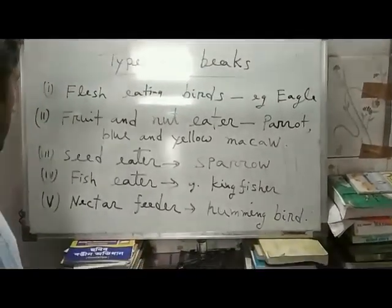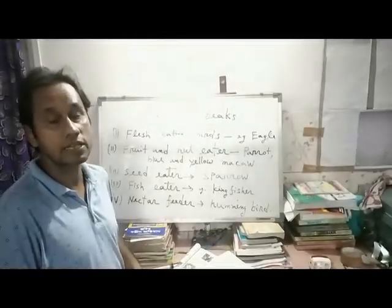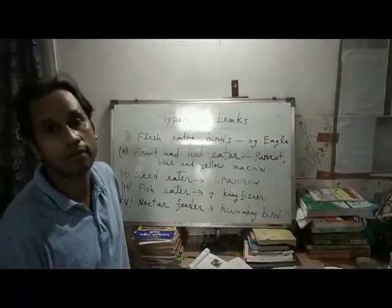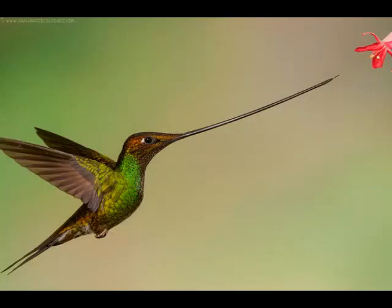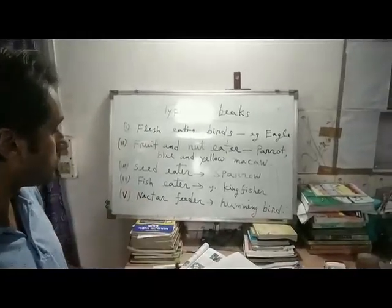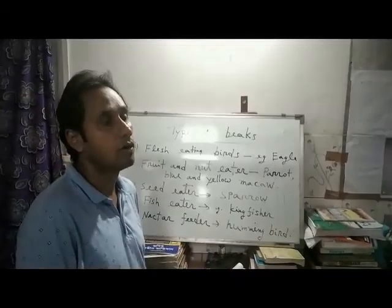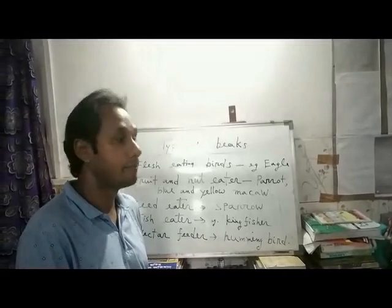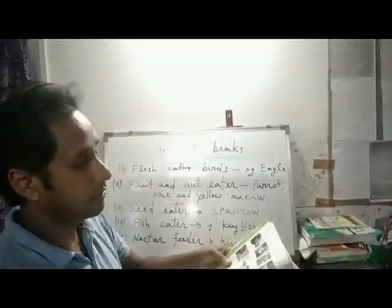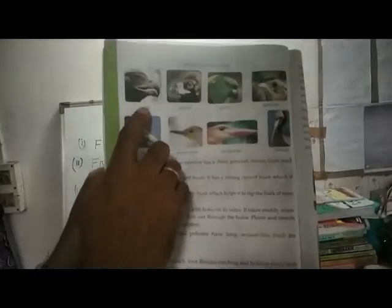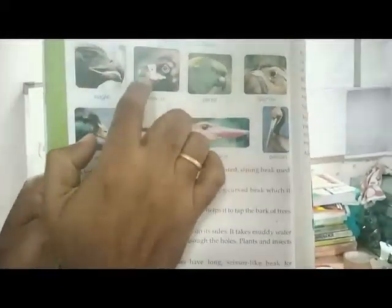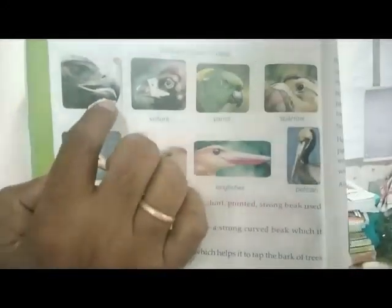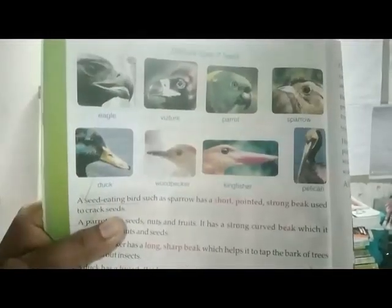In your book, page number forty-one, the definition of the beak is given, and on page number forty-two, the defined types of beaks are listed. Look at the eagle — they are flesh-eating birds. They have a strong and curved beak to tear the flesh.